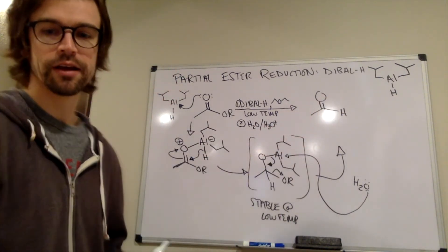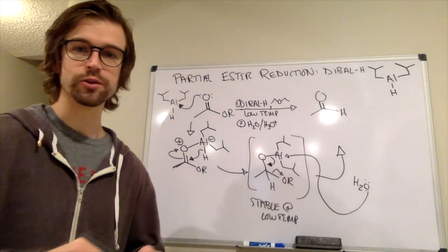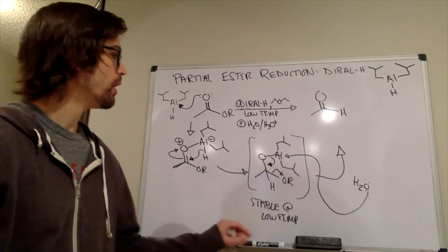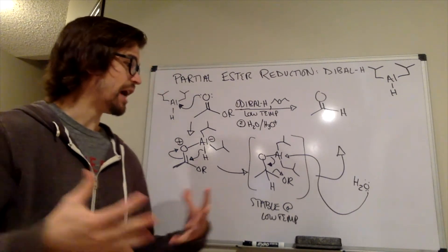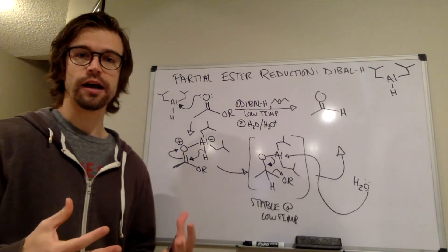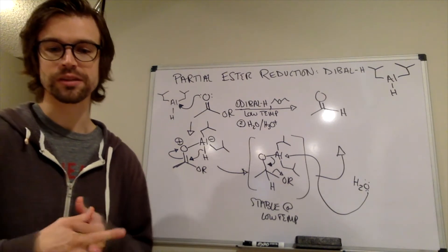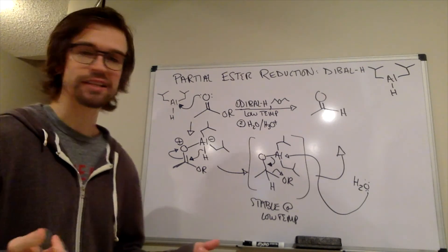And then essentially, the water being added to the aluminum species. So this is how we do that partial ester to aldehyde reduction with dibal-H. It's a pretty slick method.